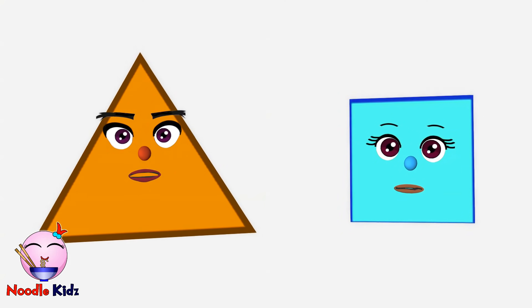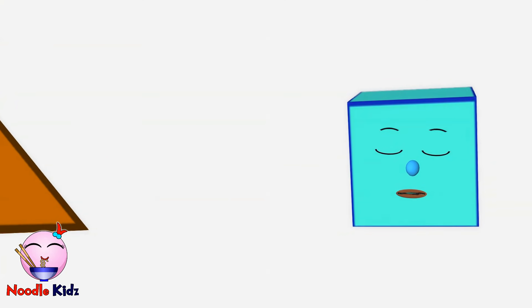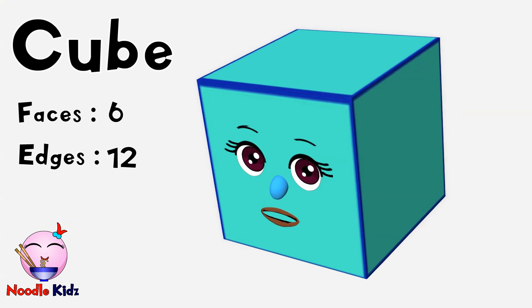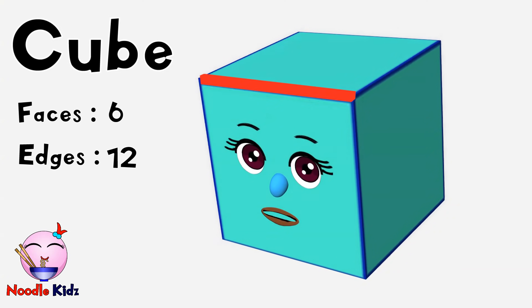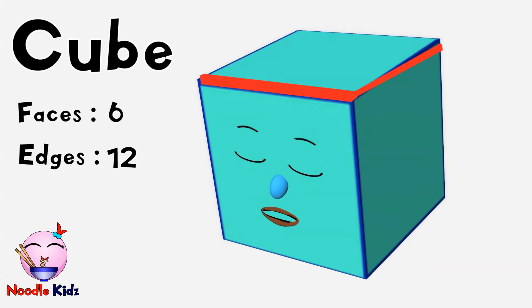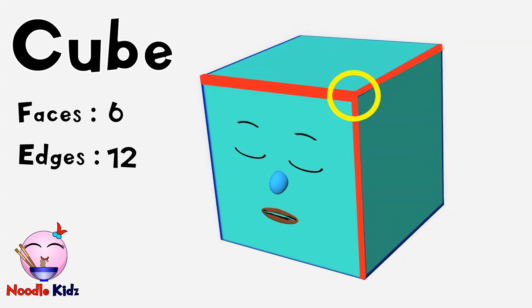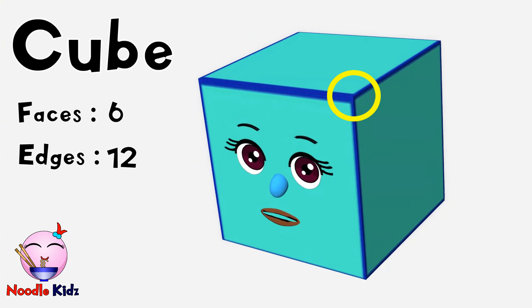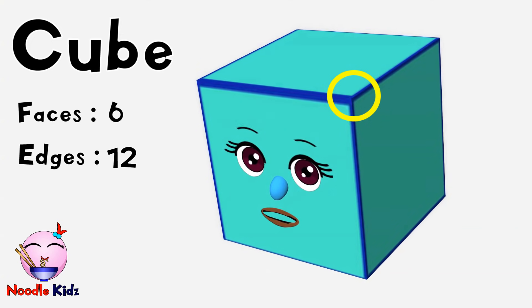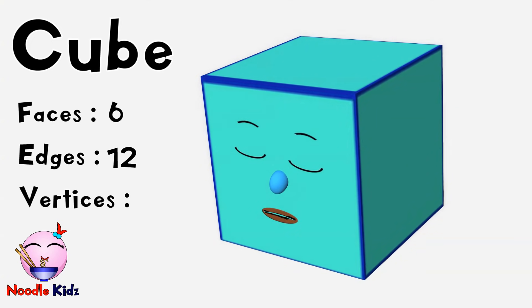Don't forget about vertices! A vertex is the place where two or more edges meet. Look at this — this is where edge one, edge two, and edge three meet. This point is called a vertex. I have more than one vertex; they are called vertices. Let's count how many vertices I have.